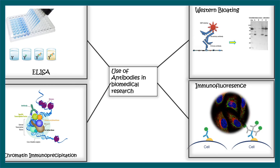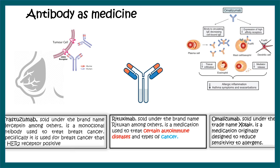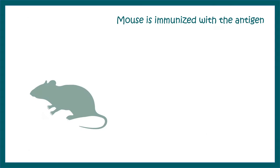Monoclonal antibodies are widely used in biomedical research for several purposes such as ELISA, Western blotting, immunofluorescence, or chromatin immunoprecipitation. Other than that, in terms of medicine, they are used as therapeutics for cancer or autoimmune diseases. So they are pretty important. In this video, let's review how they are actually generated.